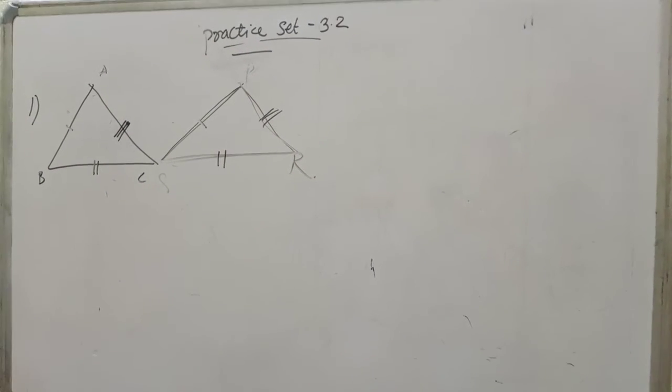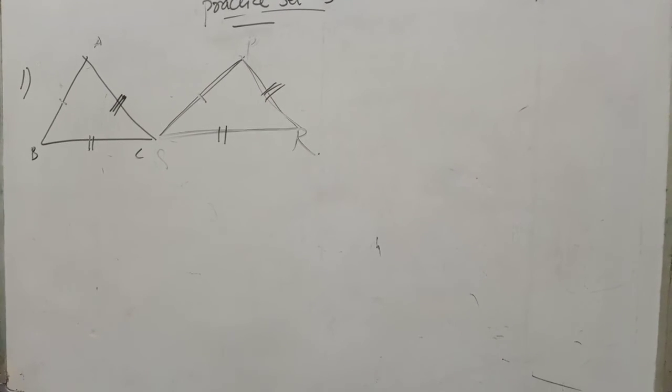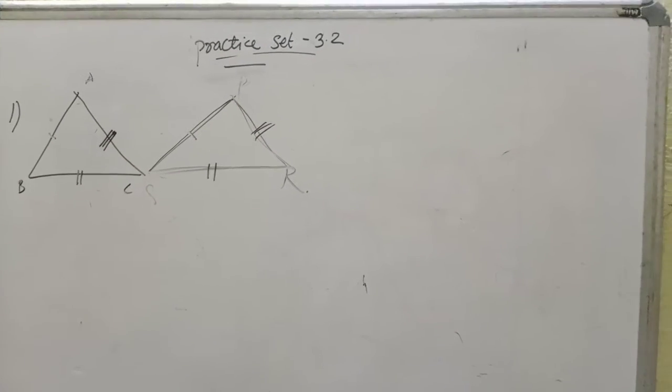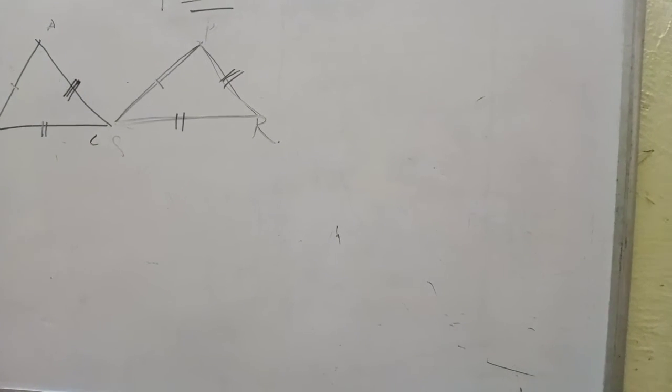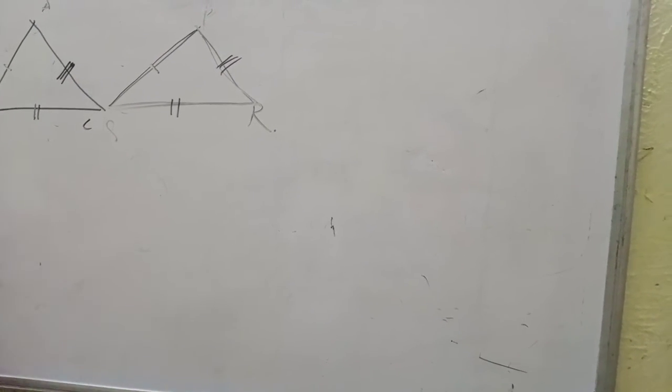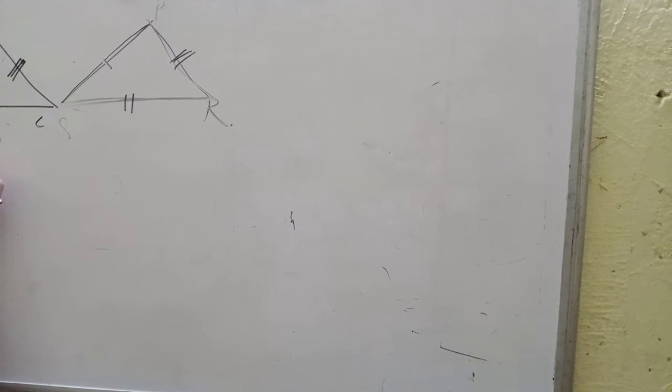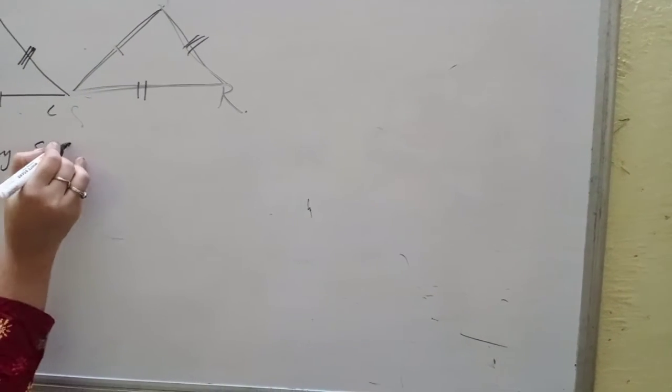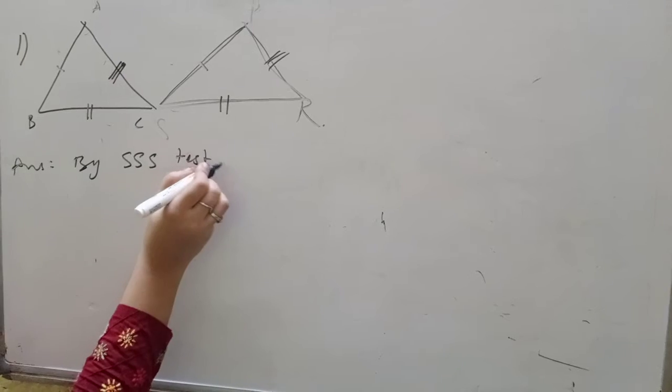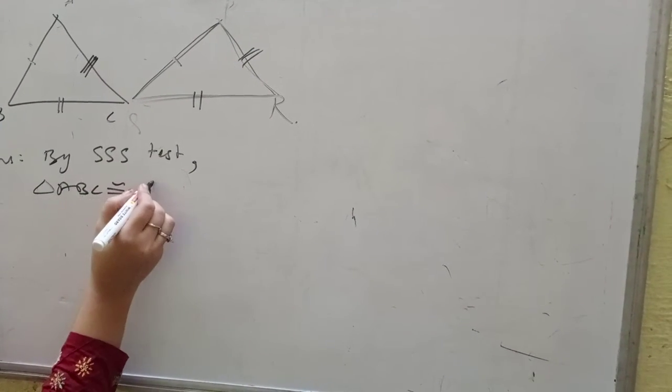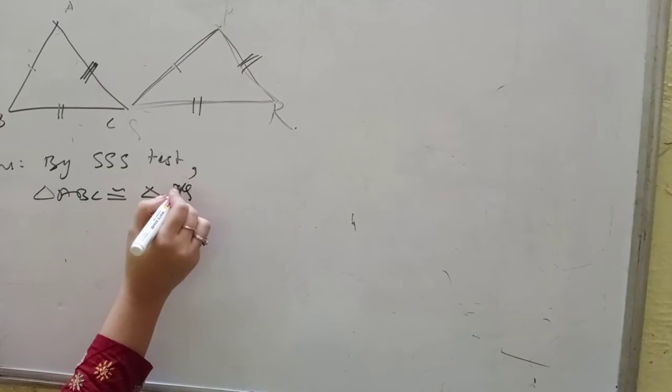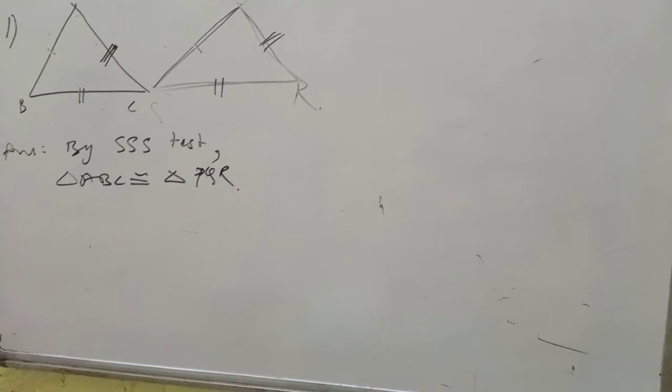So, what do we see here? Five tests we learned. This one, we see here. One angle is not given. Only the sides are given. So, side, side, side. By answer we can write: By SSS test, triangle ABC is congruent to triangle PQR. Understood?